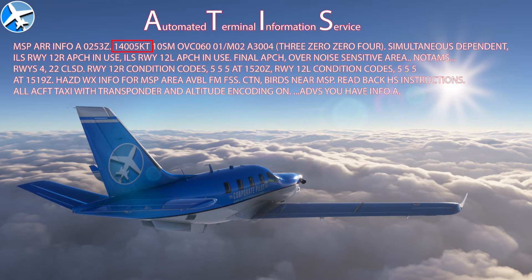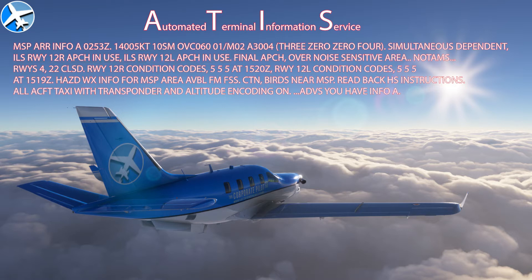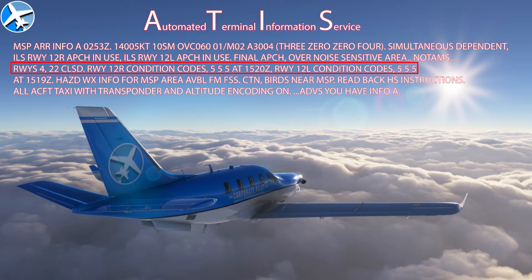The winds are 140 at 5, visibility 10 statute miles, overcast 6,000, temperature 1, dew point minus 2 (M means minus), altimeter 3004. We're doing simultaneous dependent approaches to ILS runway 12 right and ILS 12 left. Final approach goes over a noise-sensitive area. NOTAMs include: runways 4 and 22 are closed. Runway 12 right has condition codes 5, 5, and 5.